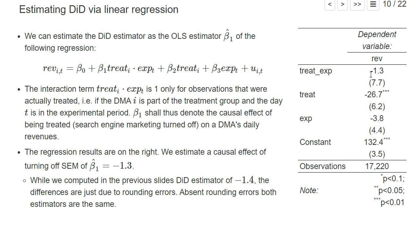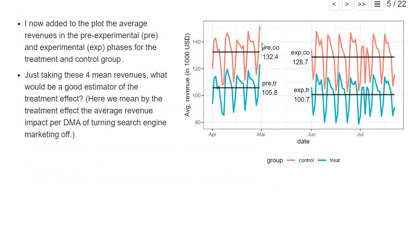One advantage of running a linear regression is that we directly get a standard error for our estimator of the causal effect. For the difference-in-differences estimator here it's 7.7, which is relatively large compared to our estimated coefficient of minus 1.3 — that's why we don't have any significance stars. While we estimate a negative effect of turning off search engine marketing, it's not significantly different from zero. In absolute numbers it's also relatively small — roughly only one percent of the average revenues in the control group.